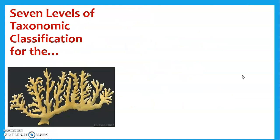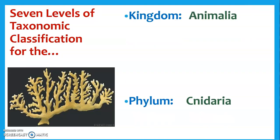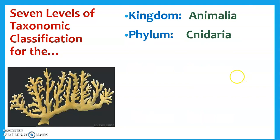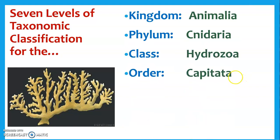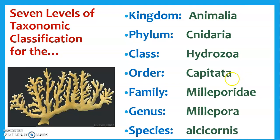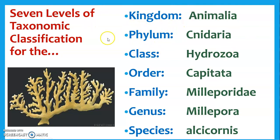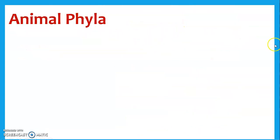So, evolution of the animal kingdom — how things got classified. Remember with classification we went domain, kingdom, phylum, class, order, family, genus, species. What we're going to be doing is staying in the whole animal kingdom, but we're going to be looking at different phyla, and eventually we're going to be looking at different classes and orders as well. We'll mostly stay at kind of this broad categorization level.